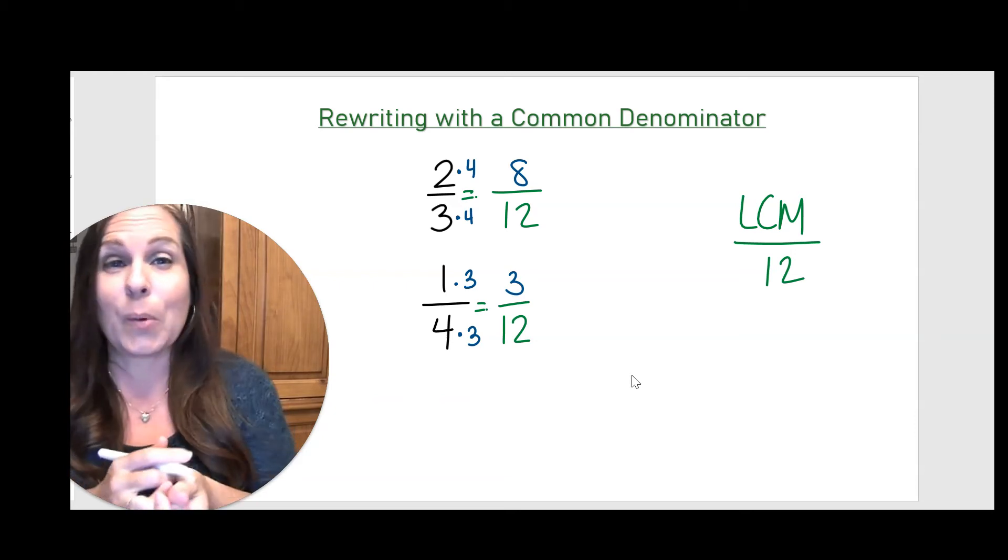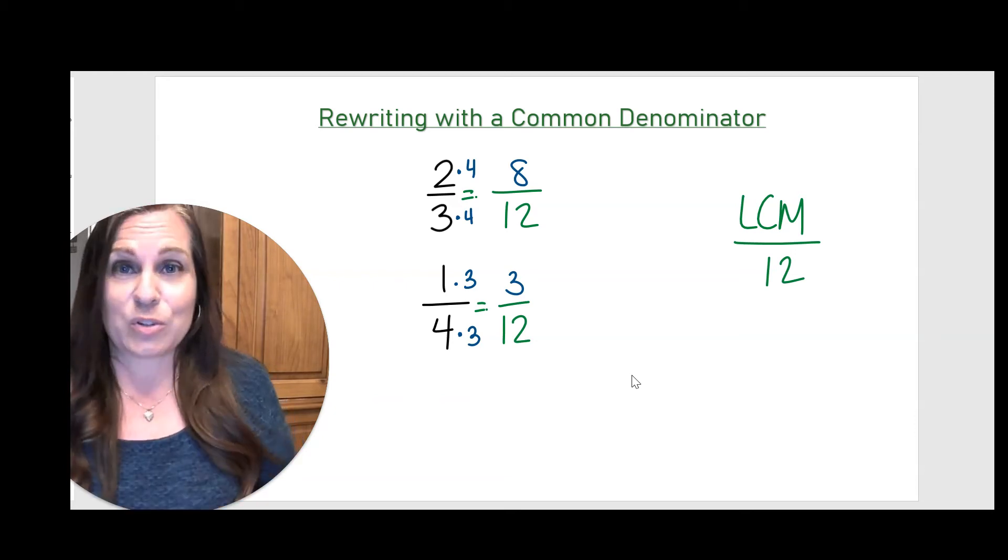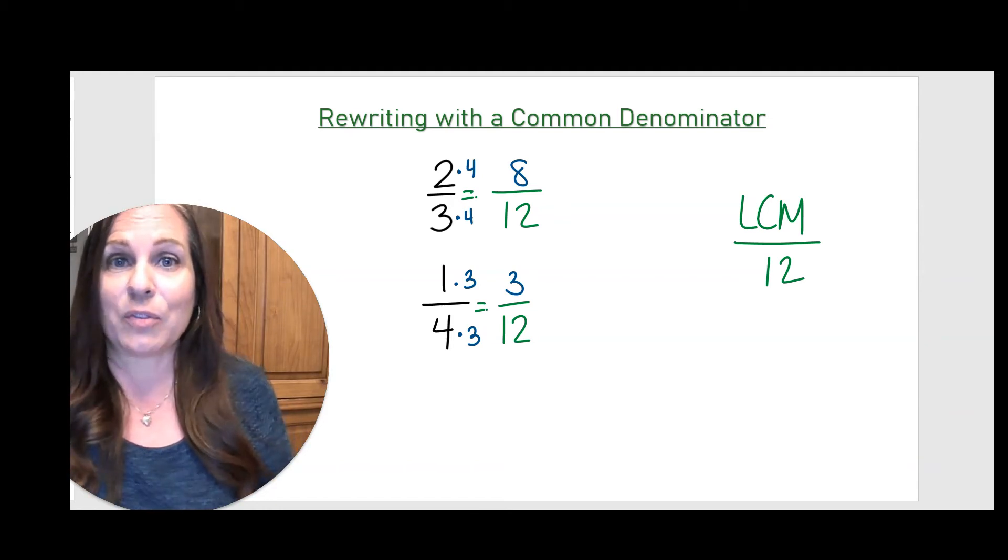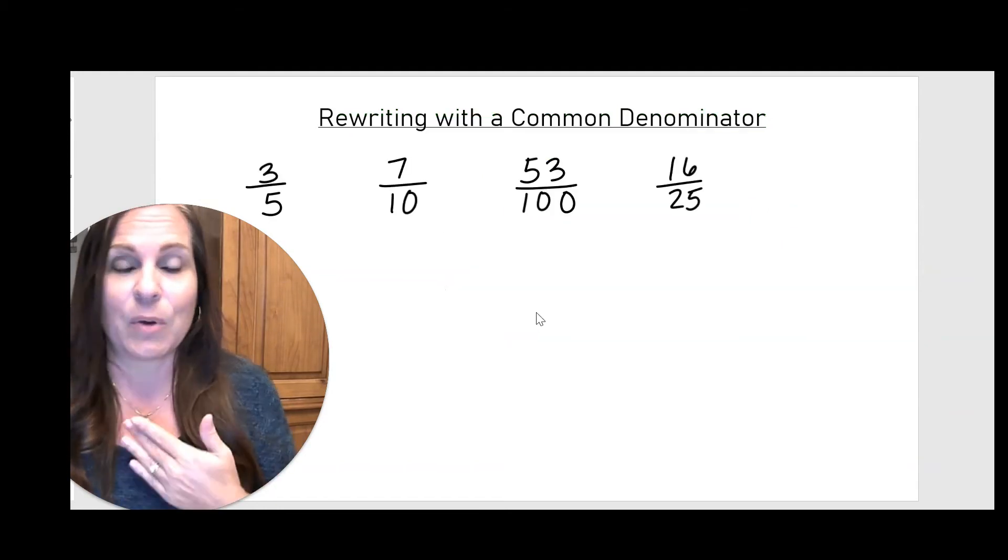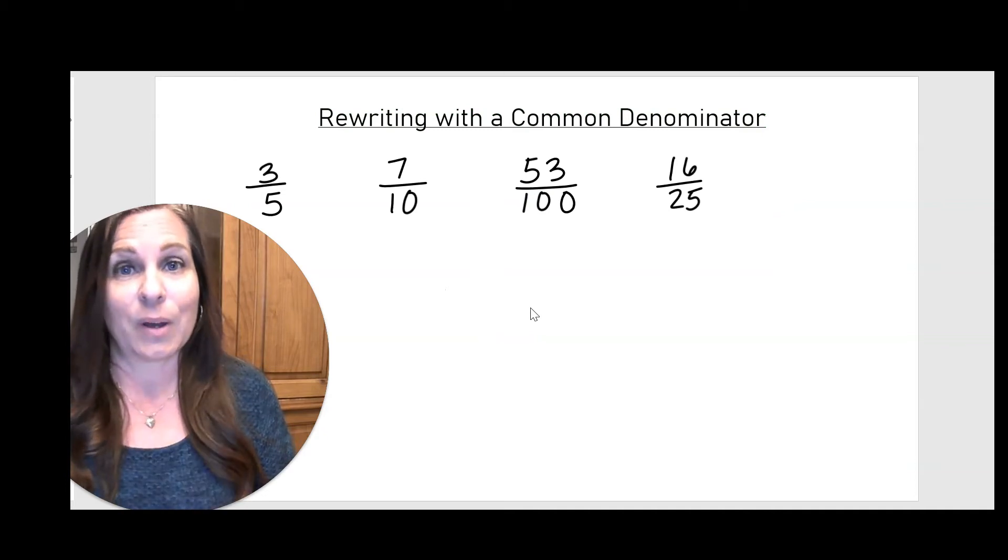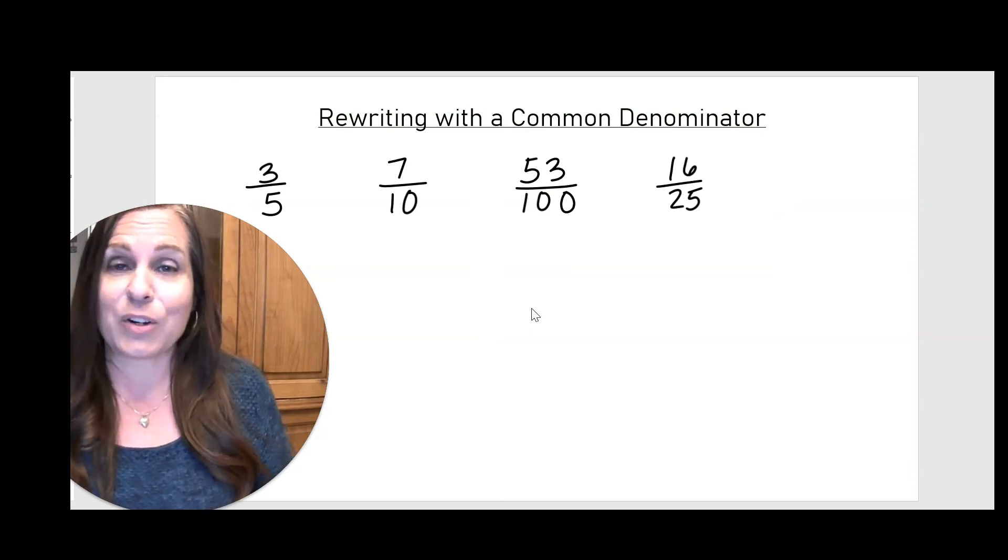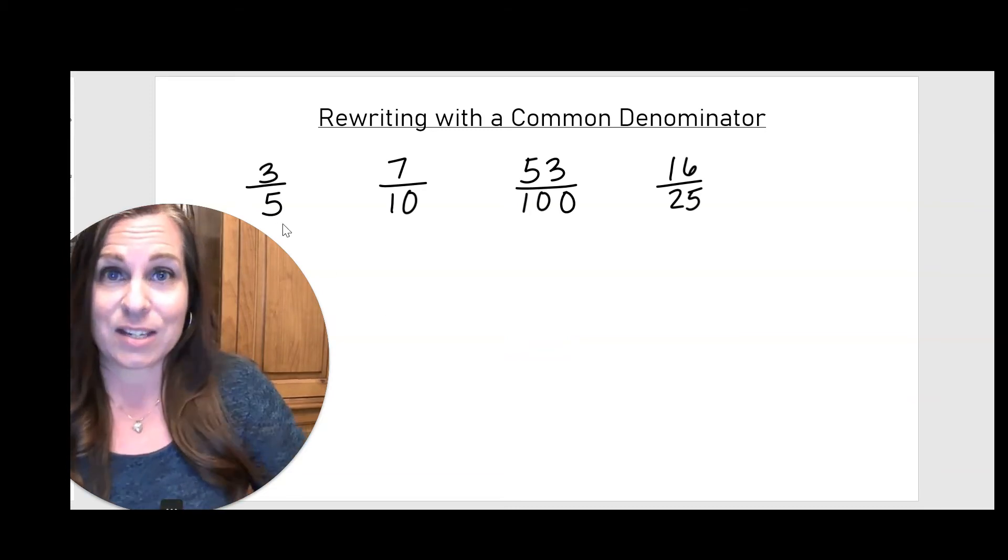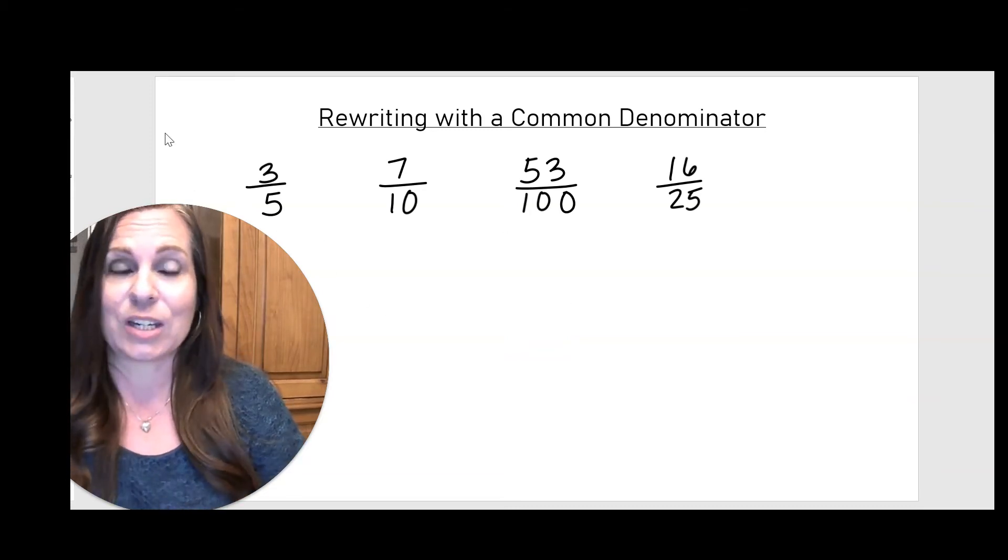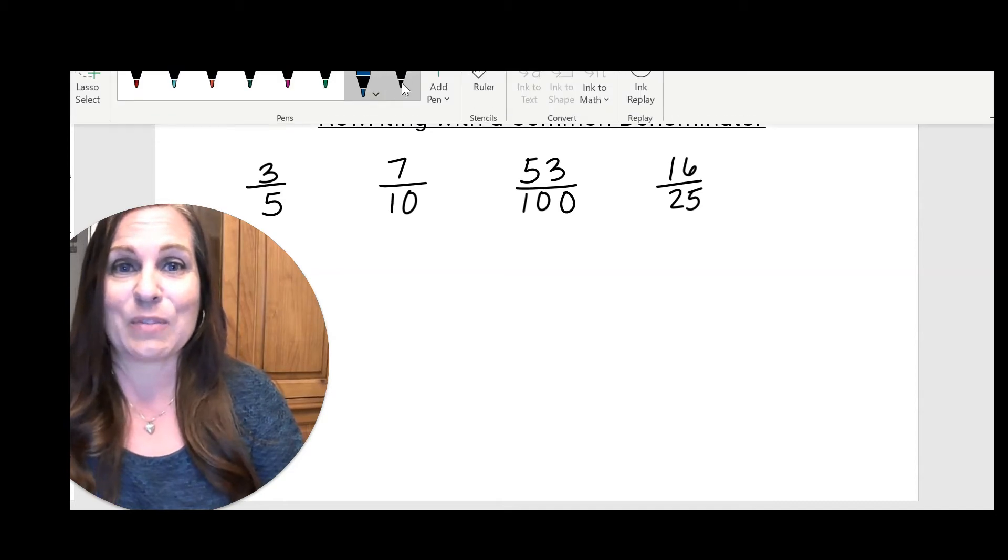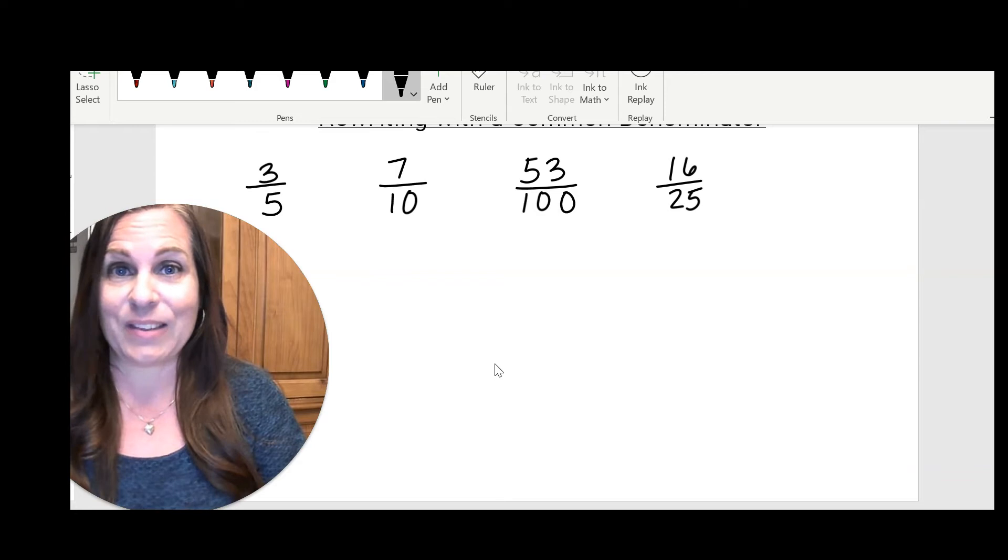But what if it's more than two fractions? What if I'm given four fractions and I have to put them all in order? I just need to find a common denominator first and then rewrite my fractions. Now finding an LCM of four numbers is a little trickier than finding an LCM of just two, but we can use the upside-down cake method. And it makes it a little easier.